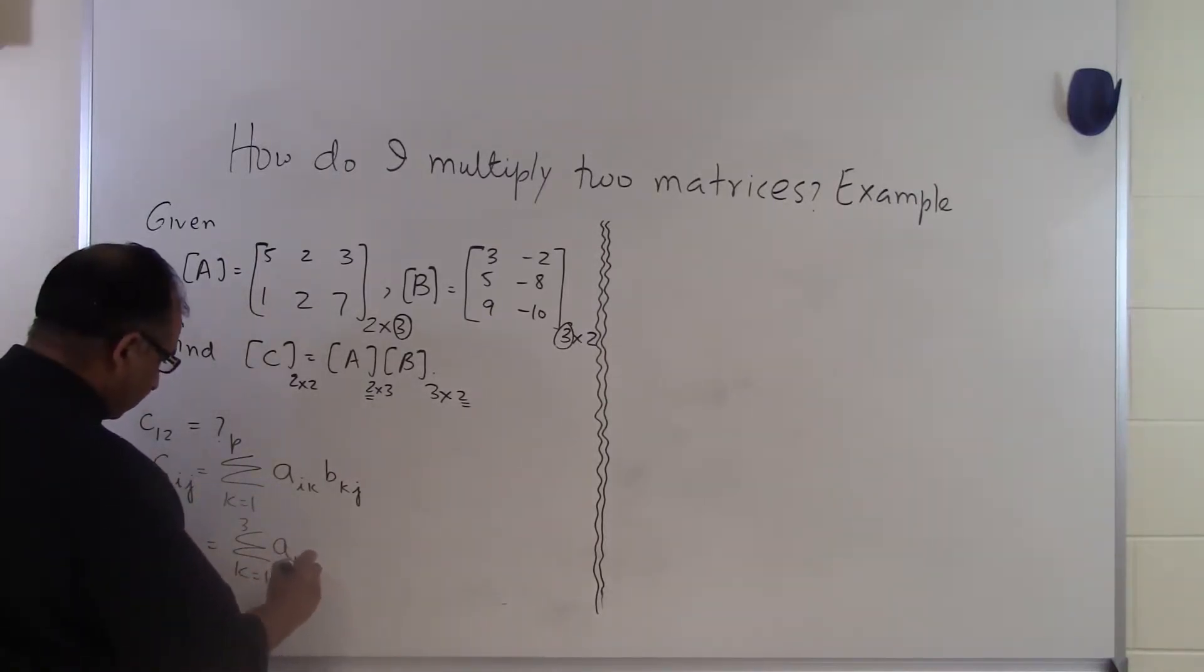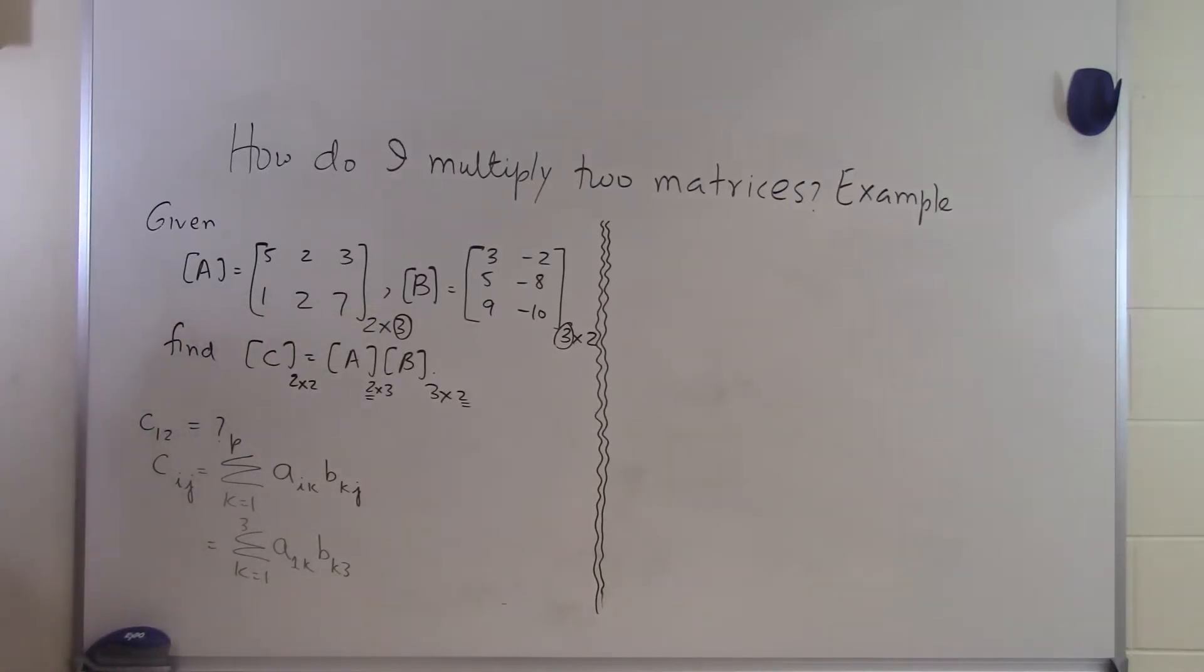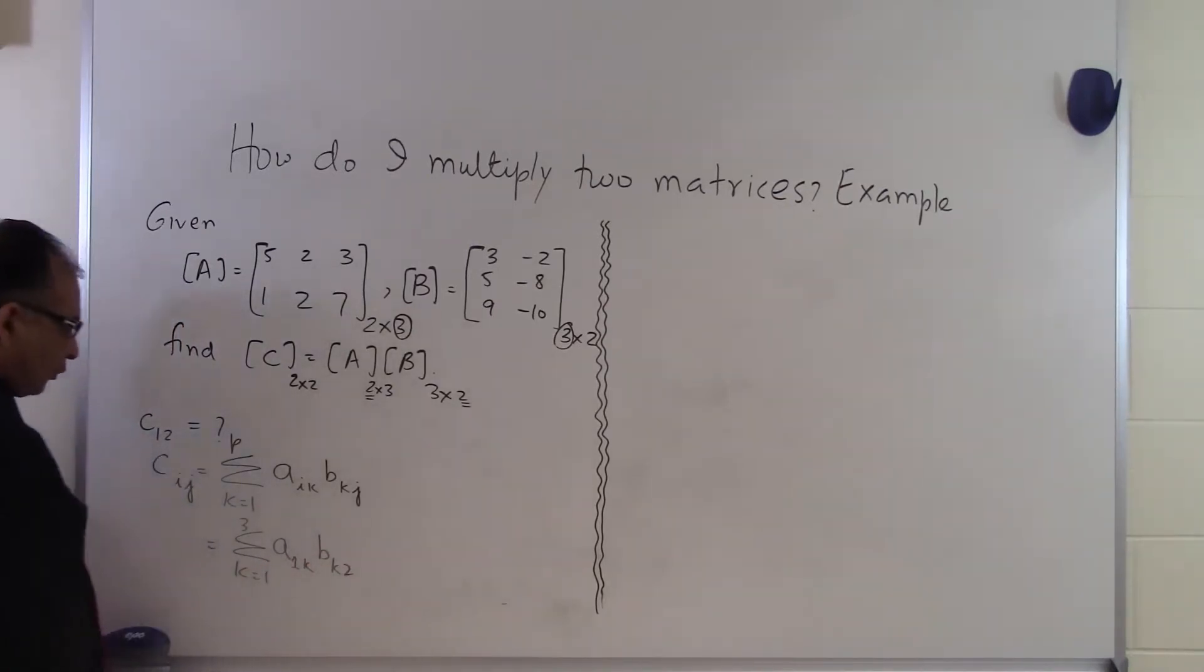And you have A, I is 1 and J is 2. So A₁ₖ, Bₖⱼ which is 2. So that's what we have for J.